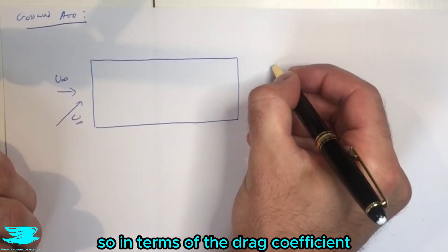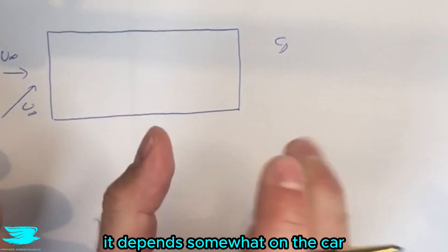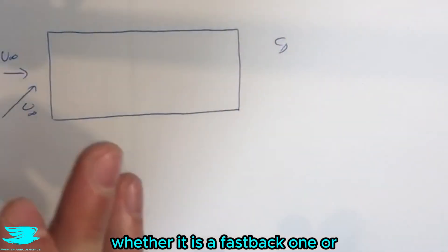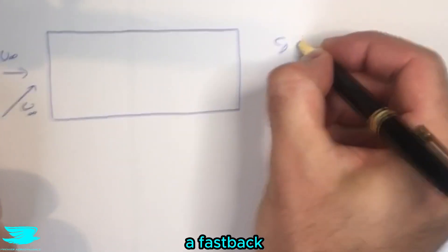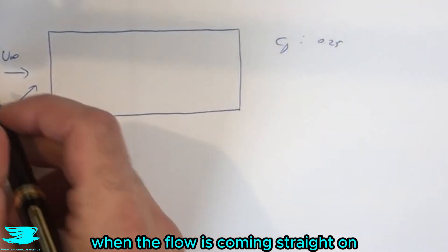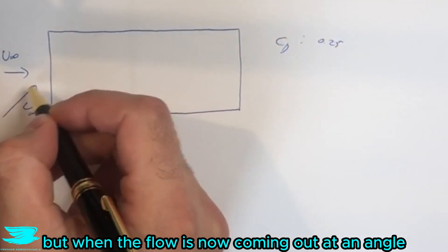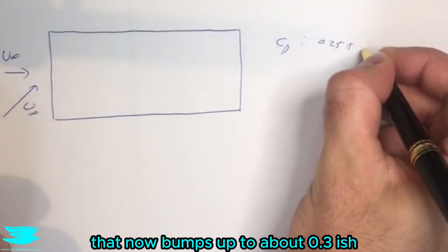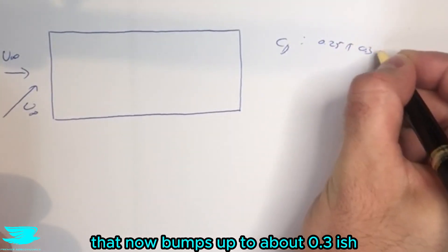In terms of the drag coefficient it depends somewhat on the car whether it is a fastback or a squareback. For example, a fastback usually might have a drag coefficient of around 0.25 when the flow is coming straight on, but when the flow is now coming at an angle that bumps up to about 0.3 or maybe 0.33.